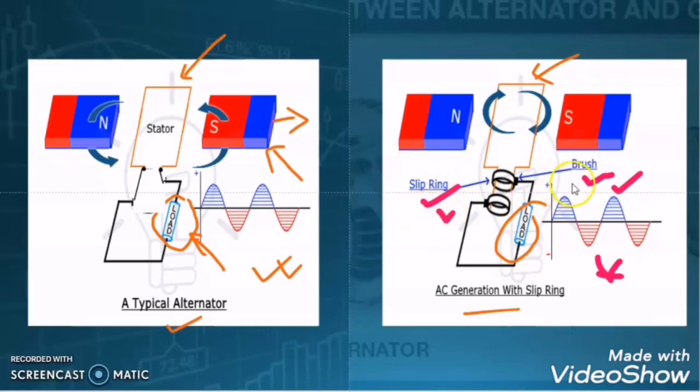Wherever there is a slip ring and carbon brush arrangement involved, it means you are compromising with the output, you are compromising with the efficiency, and the maintenance will be more.